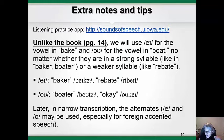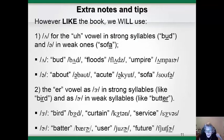Similarly, unlike the book, we will use the two-symbol OU version for the stressed vowel in 'boater' and for the unstressed version of the vowel in 'okay.' Later on, when we do narrow transcription, we may use these alternate versions of the letter E and the letter O alone, particularly for speech produced by learners of English as a second language. Like the book, however, we are going to use a different symbol for the stressed A sound, like in the word 'buh,' than for the unstressed A sound, like the second vowel in 'sofa.' Also, we will use a different symbol for the stressed ER sound, like in 'bird,' than for the unstressed ER sound, like the second vowel in 'butter.'